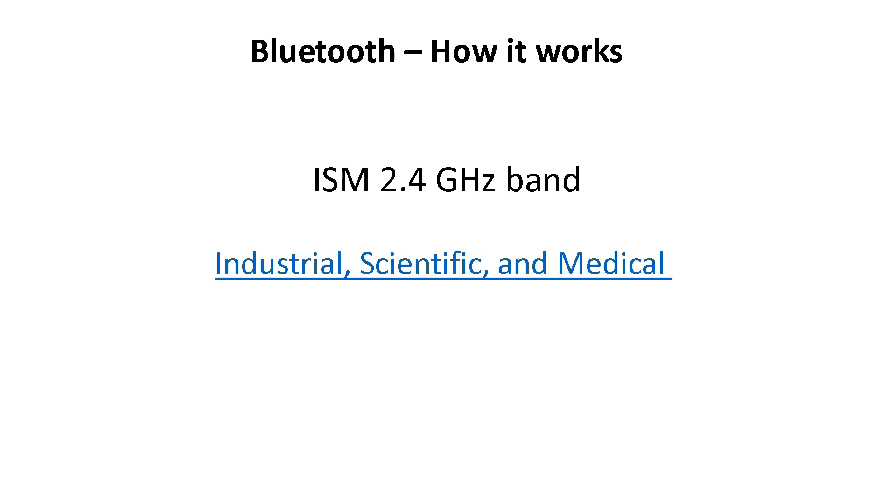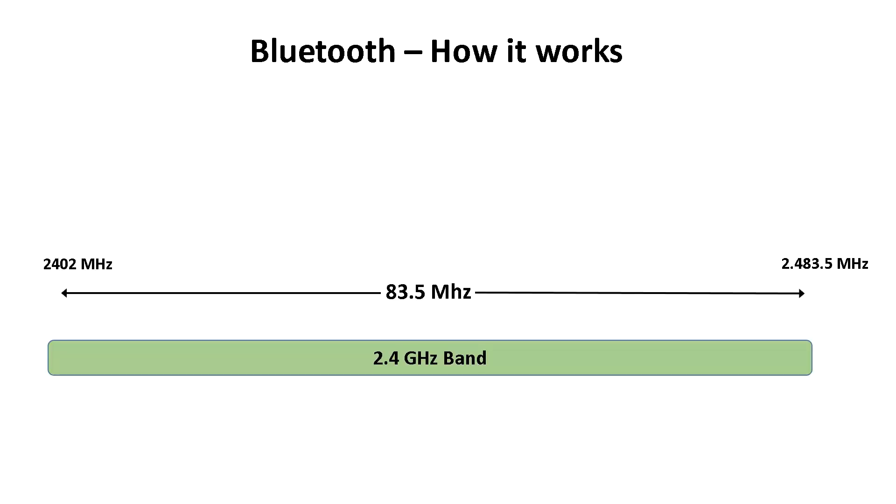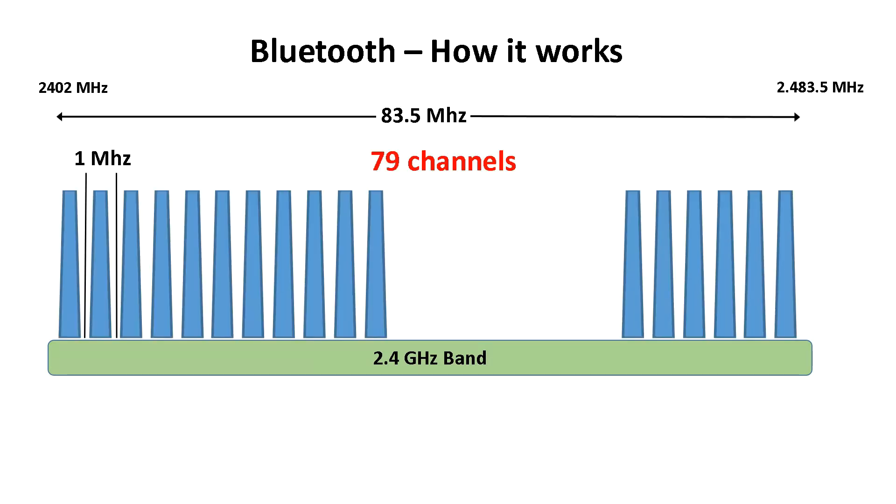The Bluetooth devices exchange data in the ISM band, that is the Industrial, Scientific and Medical band. The spectrum used by Bluetooth starts from 2402 megahertz and ends at 2483.5 megahertz, and it consists of 79 channels having one megahertz bandwidth in each channel.